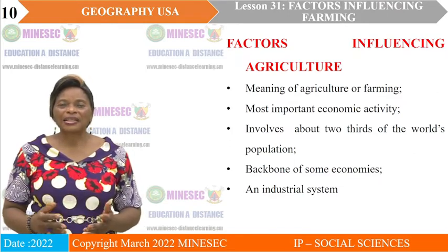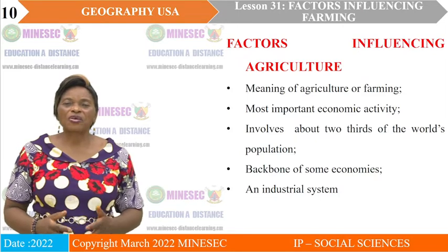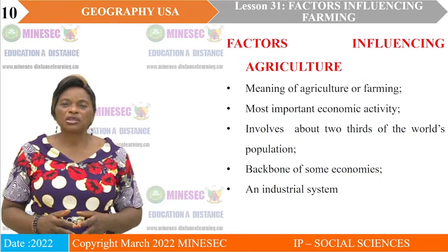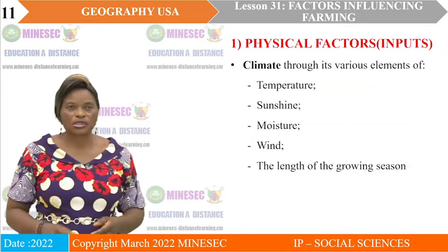Agriculture is the backbone of certain economies, especially the economies of the developing countries. It is practiced throughout the world because people need food to eat and raw materials for their agro-industries that come from farming. As an industrial system, agriculture has inputs, processes, and outputs.